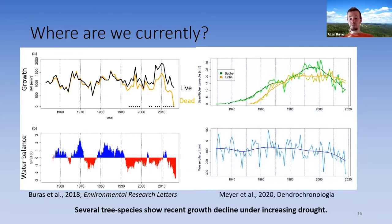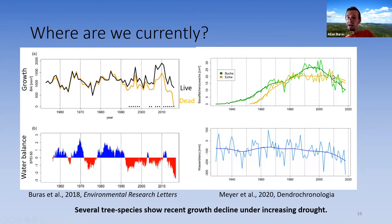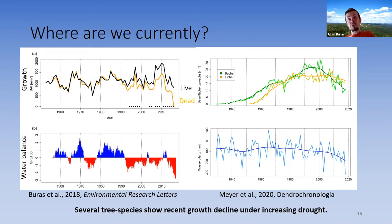A study published in Dendrochronologia comparing beech and oak growth performance over time shows that after the extreme summer of 2003, beech followed a negative growth trajectory — growth decline. For oak, recent signs of growth decline have also been encountered. Both coincide with an increasing drying of the local climate.